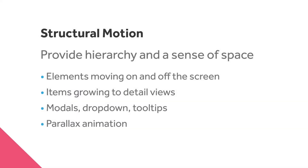The third category is structural motion. This is using references to the real world to create a sense of space in your applications. Structural motion takes a lot of inspiration from Google's Material Design, so if you're familiar with it this area will seem pretty intuitive, and if not we're going to look at a few examples from their design system.